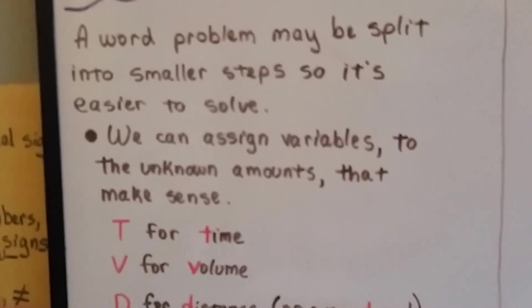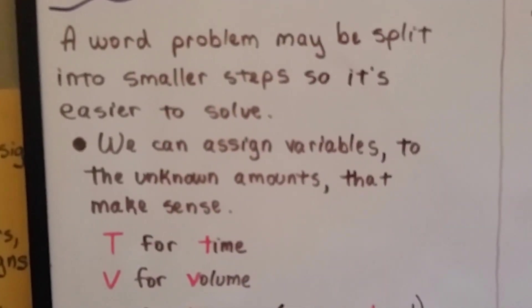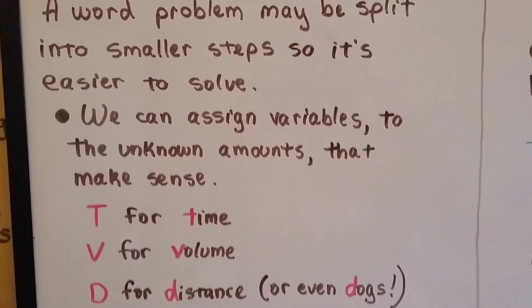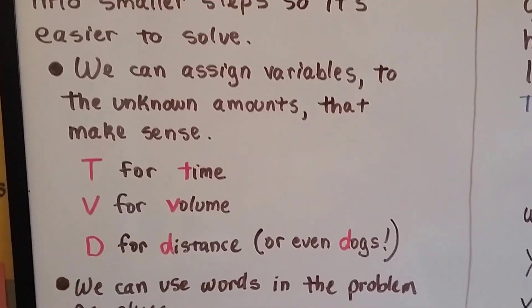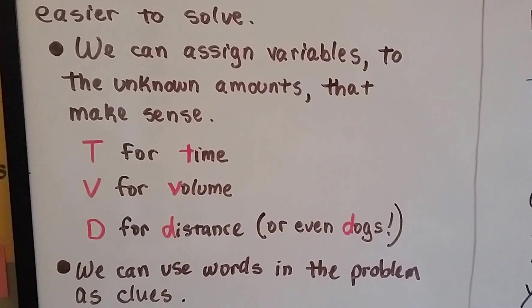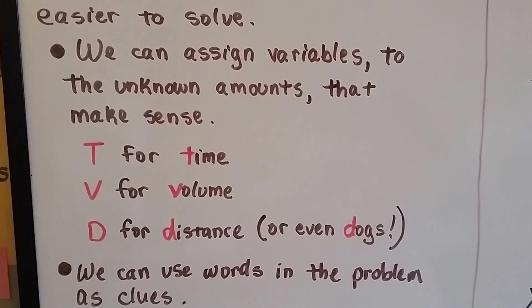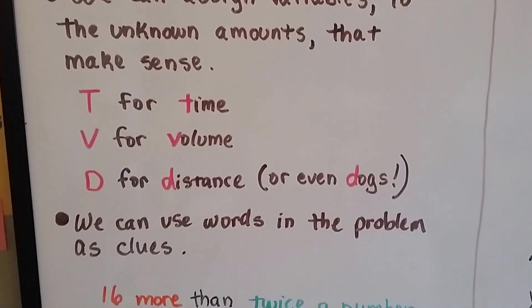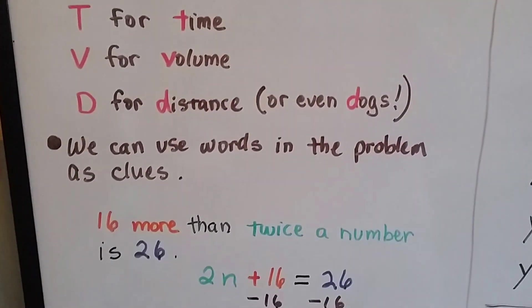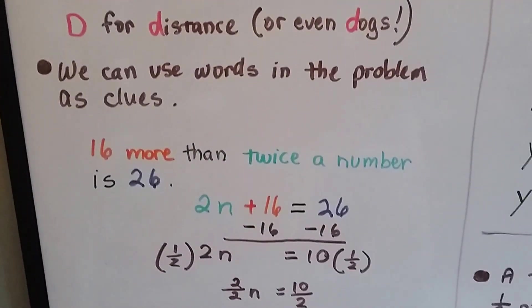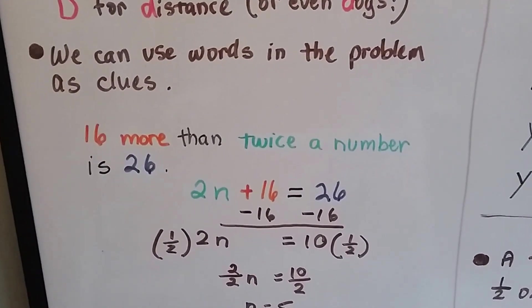A word problem may be split into smaller steps so it's easier to solve. We can break it up. We can assign variables to the unknown amounts that make sense. We can use T for time, V for volume, D for distance, or even D for dogs if that's what it needs. We can use clue words in the problem, and that will help us figure out what we need to do.